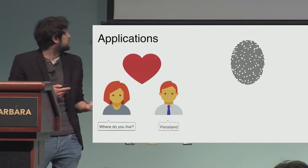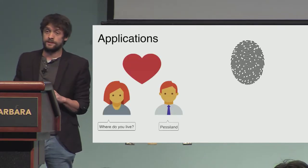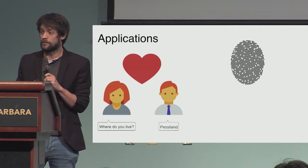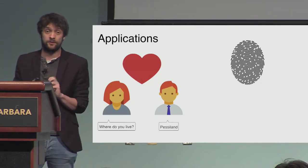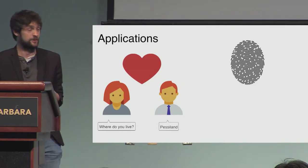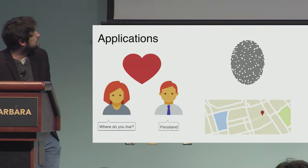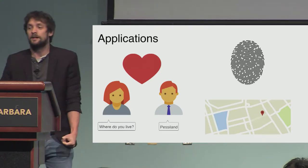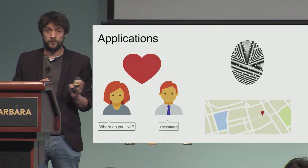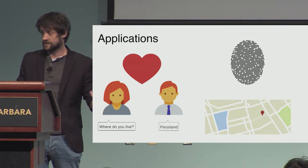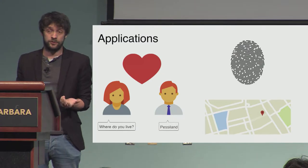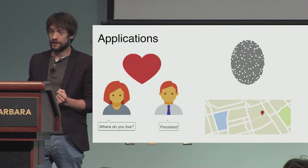Another application is two people with dating preferences who want to know whether the intersection of their preferences is large or small, or potentially even learn the intersection itself. A different application is a ride-sharing service where two people want to go from different starting points to different endpoints and would only like to share a cab if they have a large intersection of routes.